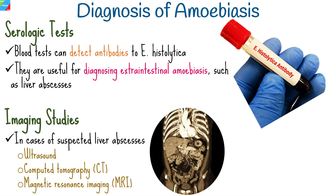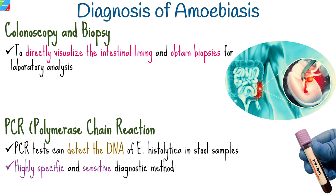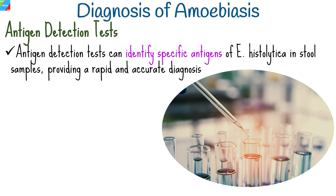In cases of suspected liver abscesses, imaging studies such as ultrasound, computed tomography, or magnetic resonance imaging may be used to visualize the abscess and assess its size and location. Invasive procedures like colonoscopy may be performed to directly visualize the intestinal lining and obtain biopsies, particularly when stool tests are negative. PCR tests can detect the DNA of Entamoeba histolytica in stool samples with high specificity and sensitivity. Antigen detection tests can also identify specific antigens of Entamoeba histolytica in stool samples, providing rapid and accurate diagnosis.